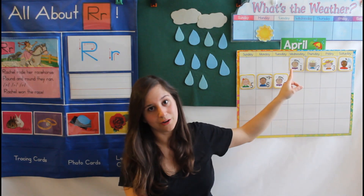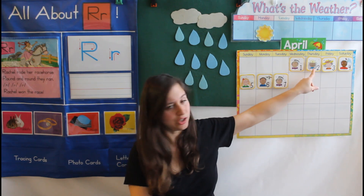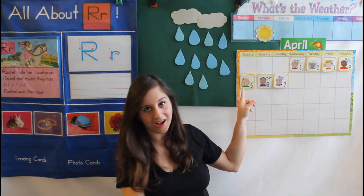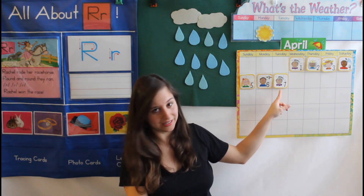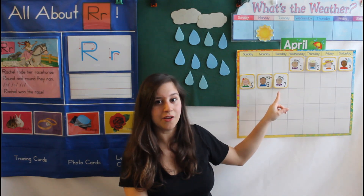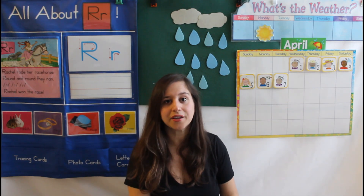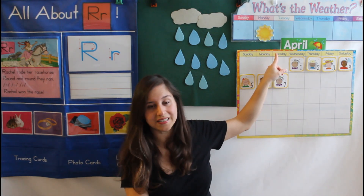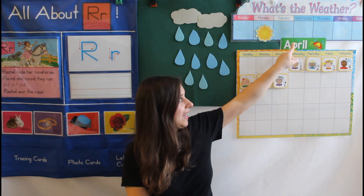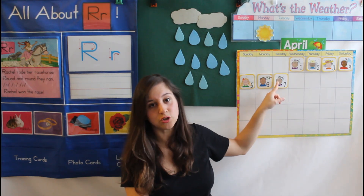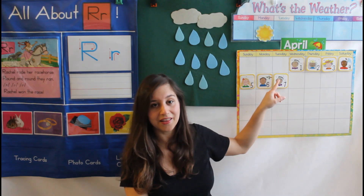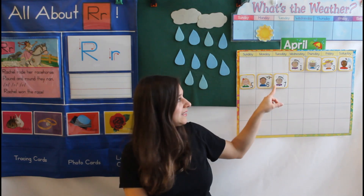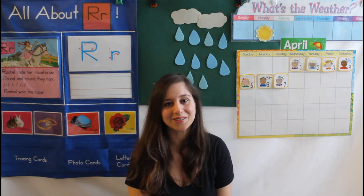Let's count to figure out the date. One, two, three, four, five, six, seven. This is the number seven. For calendar, we say seventh. Can you say seventh? Great job. Let's look up and see T for Tuesday. Today is Tuesday, April 7th, 2020. Let's say it again together. Today is Tuesday, April 7th, 2020.